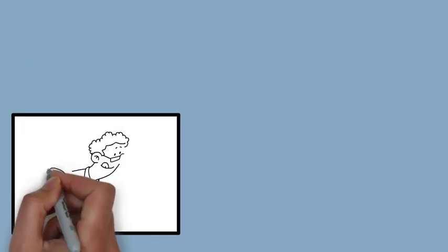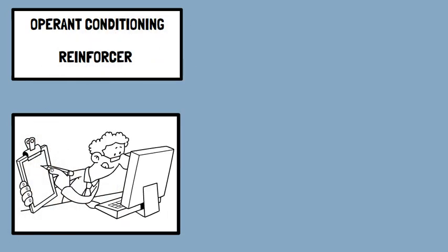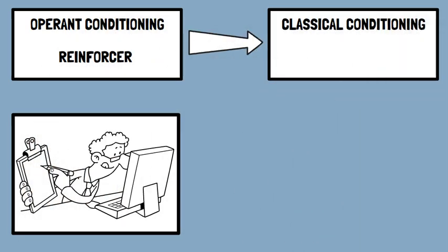In the two forms of conditioning, technical terms used to characterize the experimental proceedings are different. Moreover, what is called a reinforcer in operant conditioning is called an unconditioned stimulus in classical conditioning.